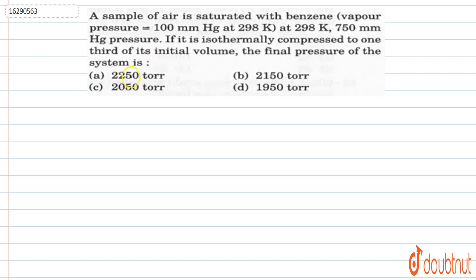Options are 2250, 2150, 2050, and 1950 torr. Now I have a container of benzene. The vapor pressure due to this benzene is 100 mmHg.